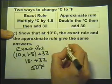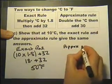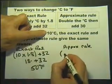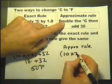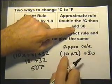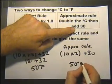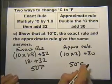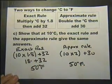Now let's look at the approximate rule. We're going to take the 10 degrees centigrade, double it which means multiply it by 2, and then add 30. So 10 times 2 is 20, 20 add 30 is 50. So that actually does show that 10 degrees centigrade gives 50 degrees Fahrenheit using either rule.